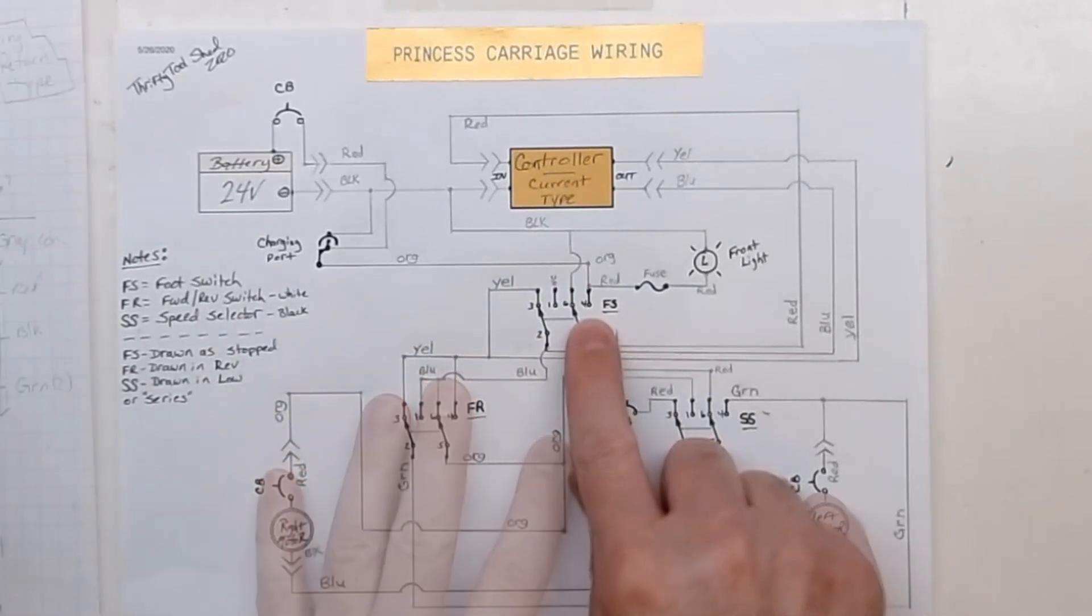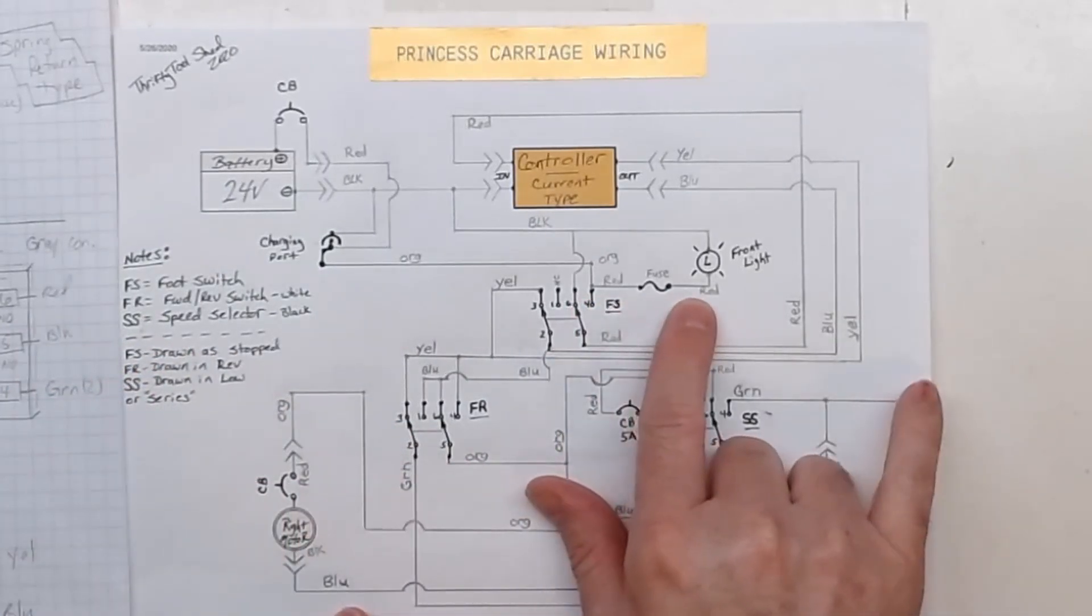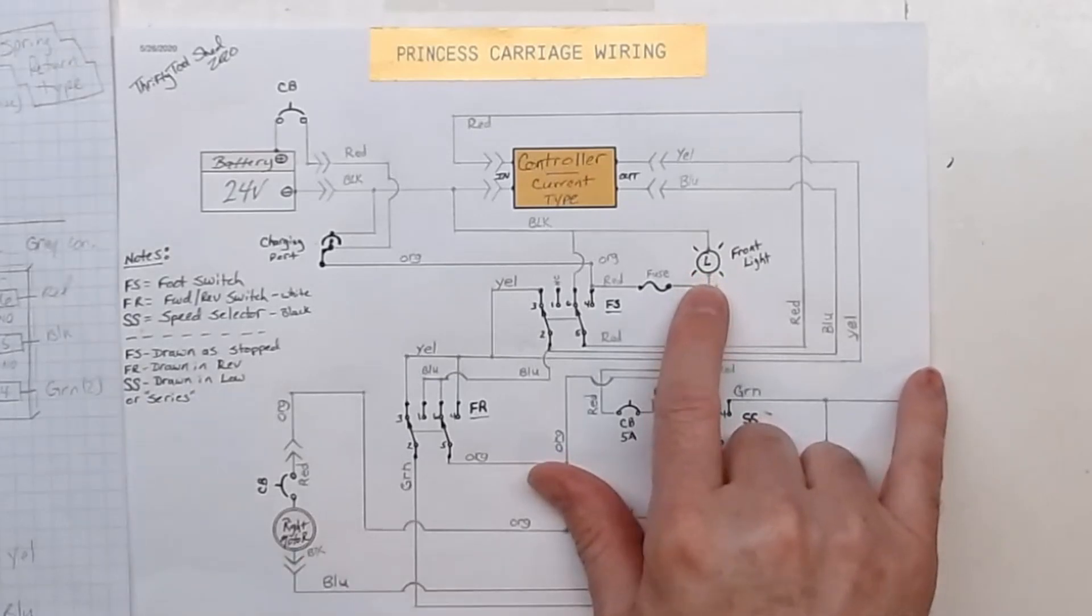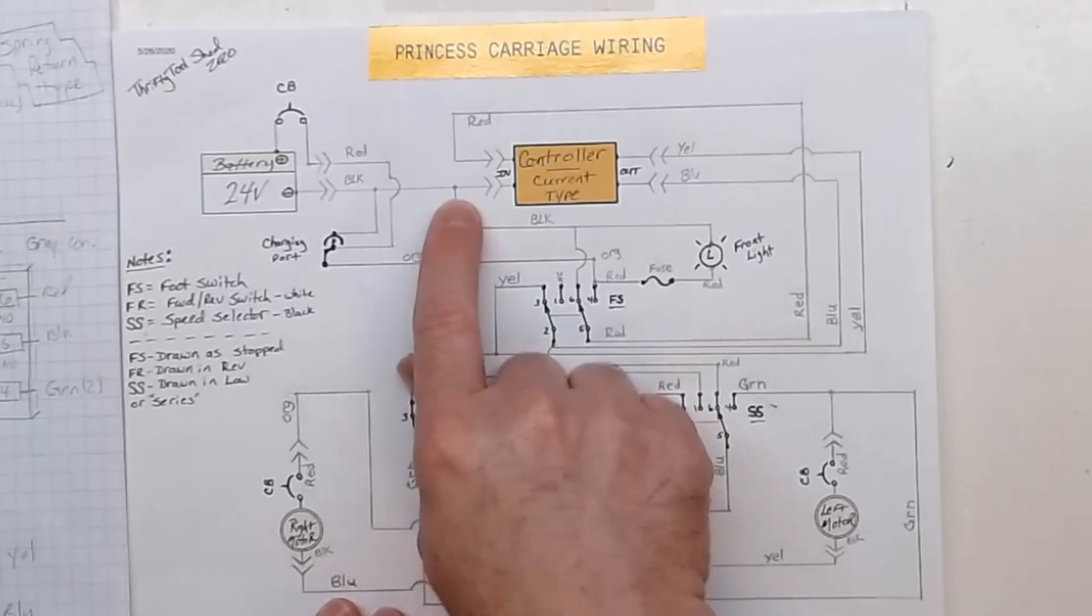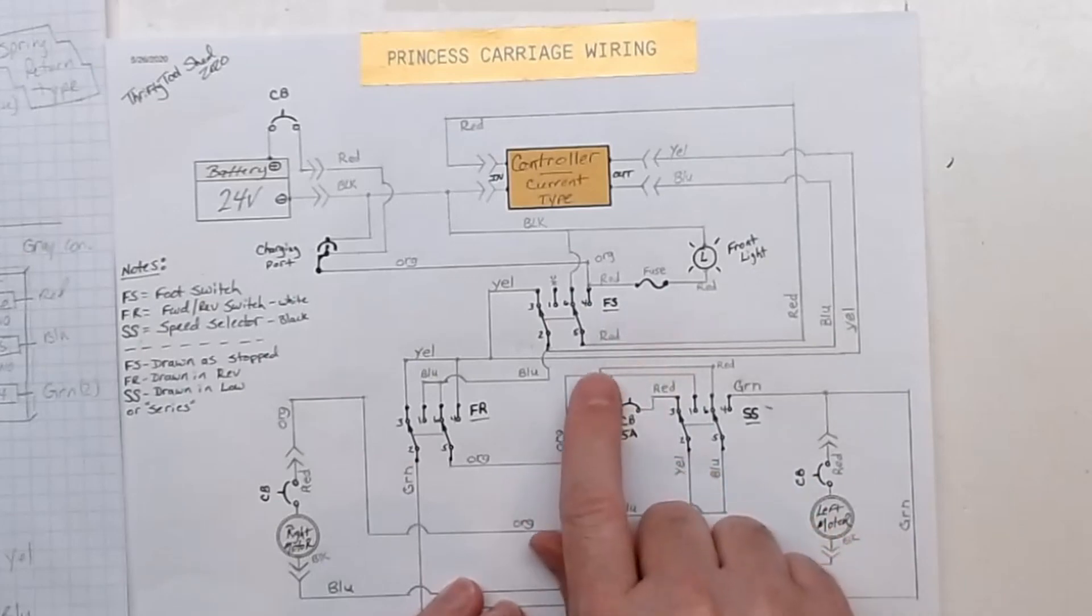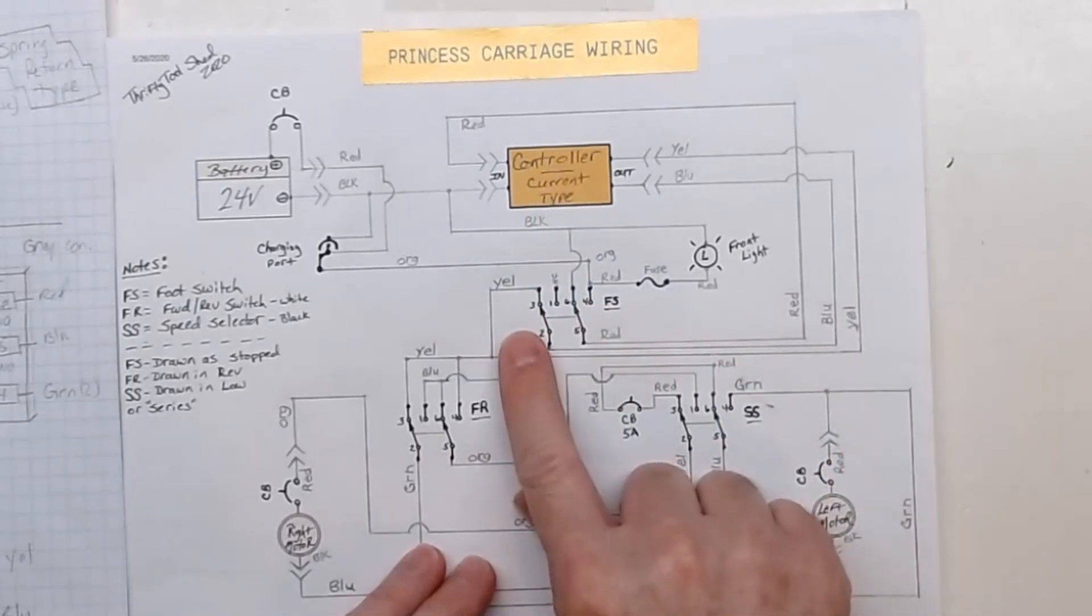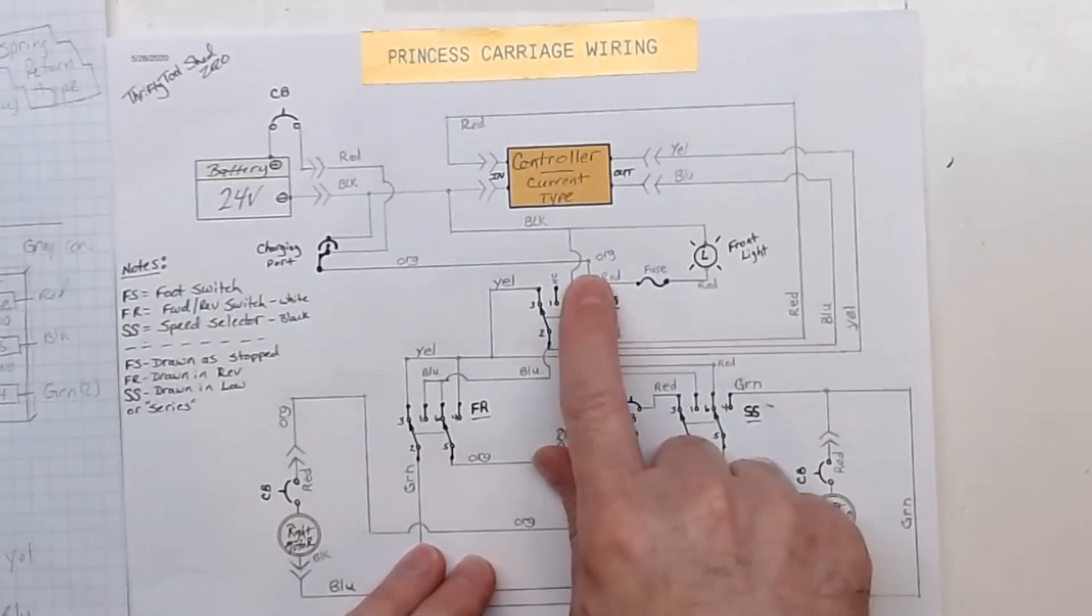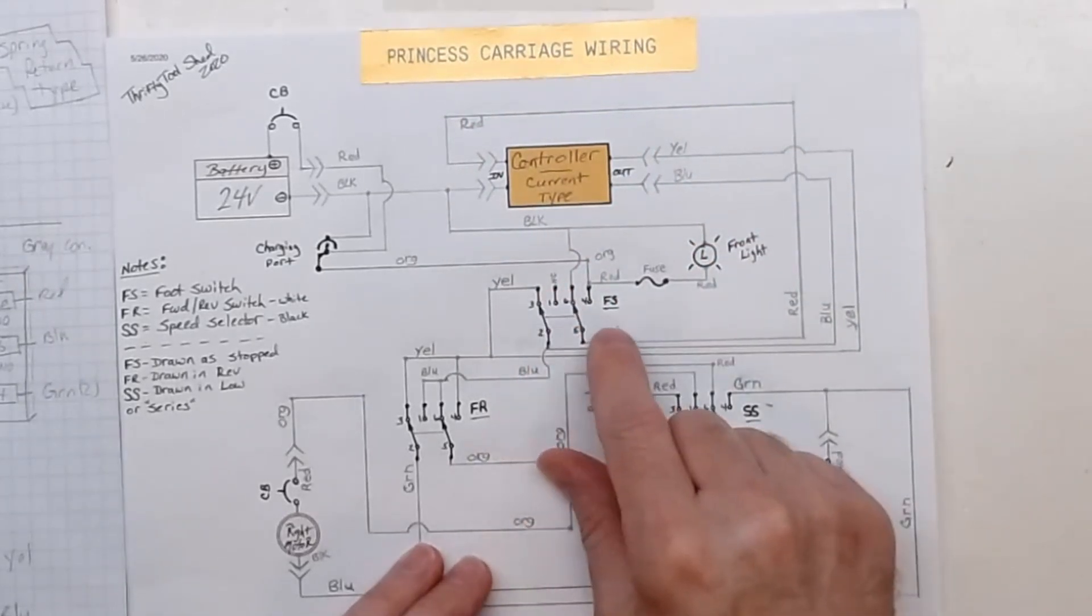Now we have our orange that if it's not charging will come through to our foot switch. That orange also goes to a fuse and goes to a little front light, I'm assuming LEDs. When that foot switch is activated, orange goes to red and our controller gets power.